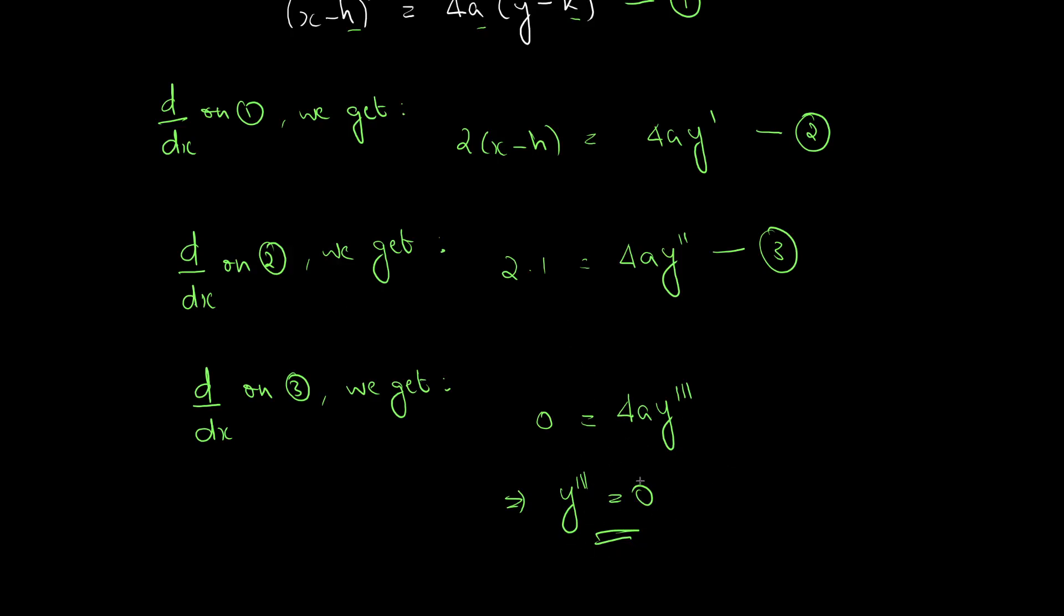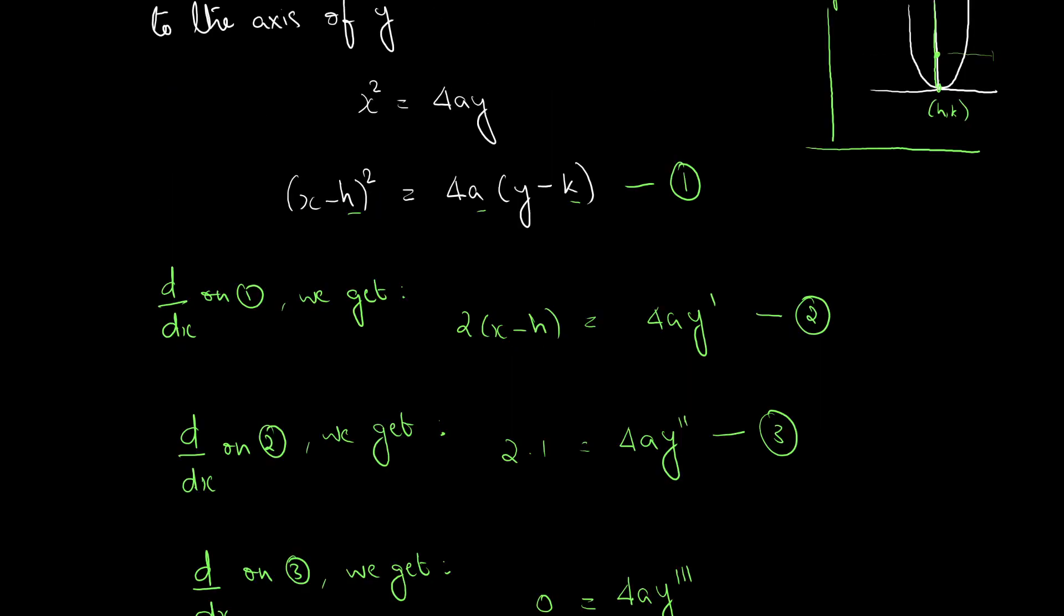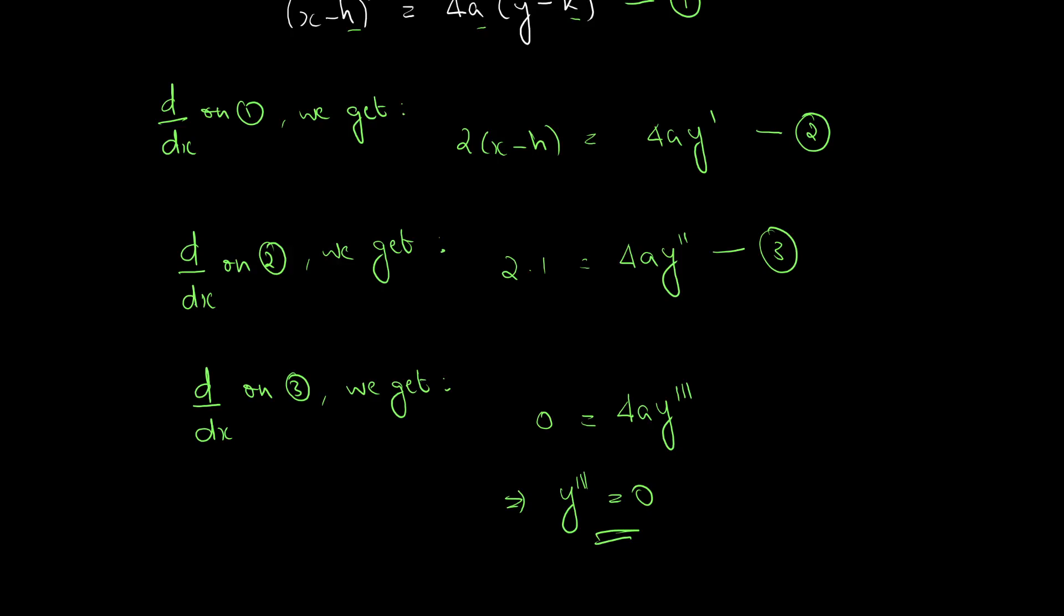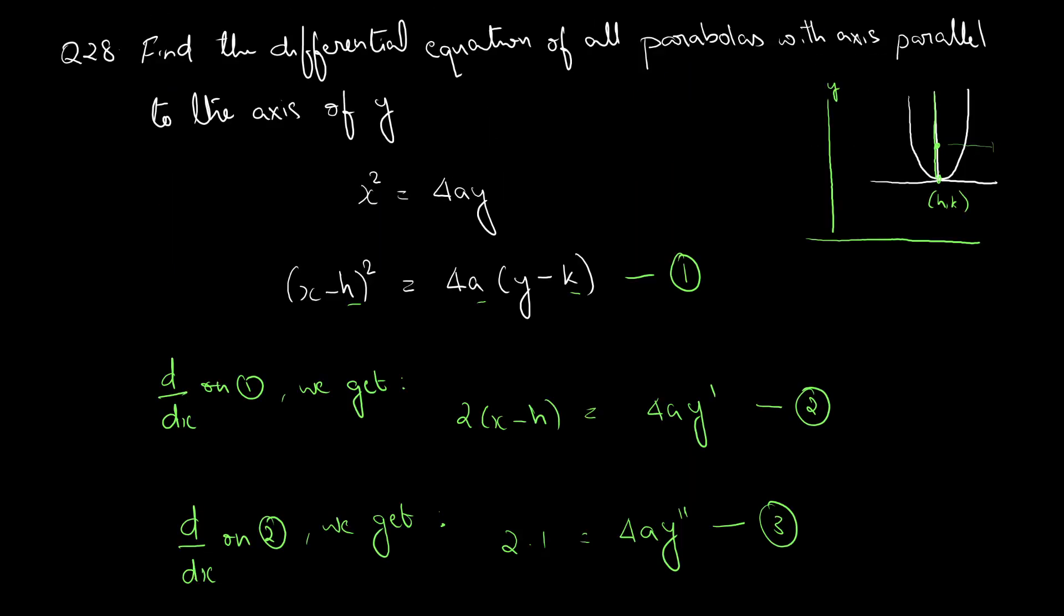So, we don't have to substitute and eliminate. We can directly write y triple dash is equal to 0 is a solution to the family of curve mentioned in the question. So, this is the solution to question number 28.